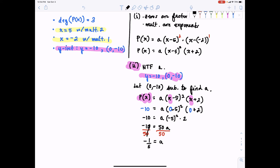And there we have it. So now we can say p(x) is equal to negative 1 fifth times x minus 5 squared times x plus 2.